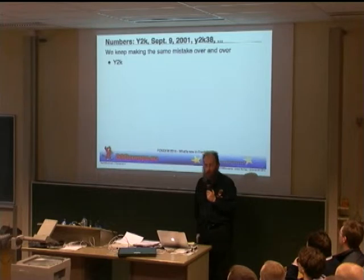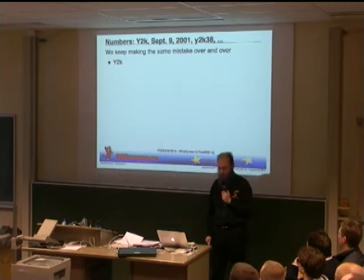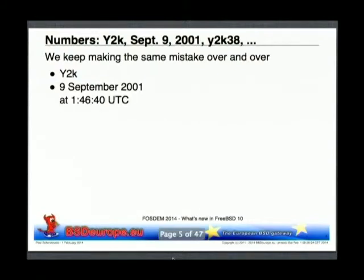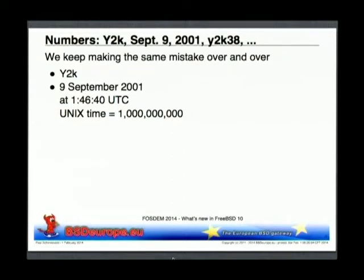FreeBSD 10 — 10 is a number, and we seem to have some problem with numbers. We keep making mistakes over and over again. Y2K — who doesn't know what the Y2K problem was? On the 9th of September 2001, we had another similar problem at 1:46:40 UTC. The Unix internal clock reached the value of 1 billion. That should not matter because it's a 32-bit binary value, but still there are applications that handle Unix time converted to a decimal string, and that string grew one digit larger and caused some problems.